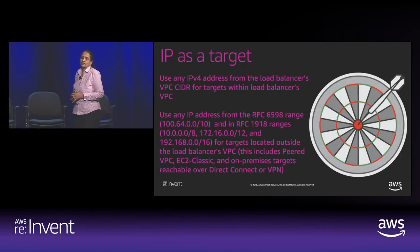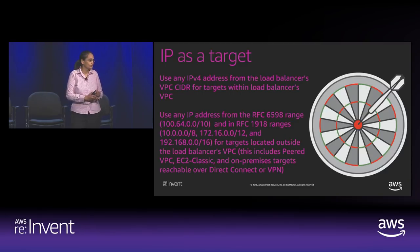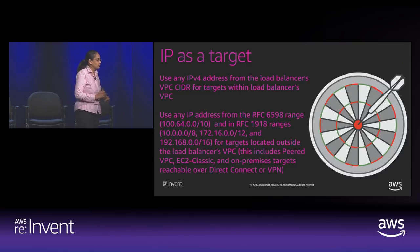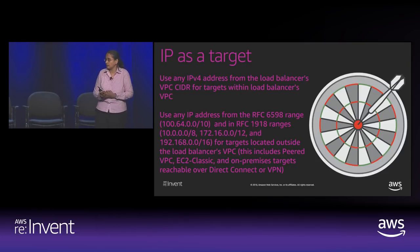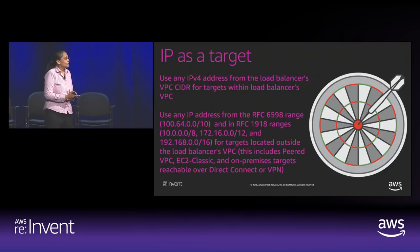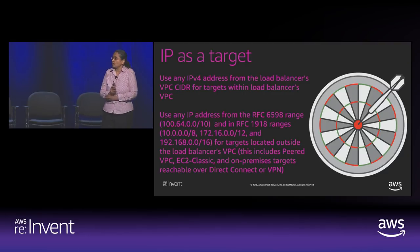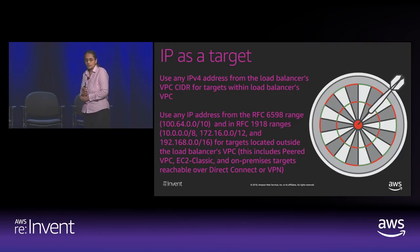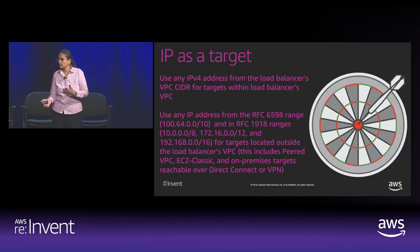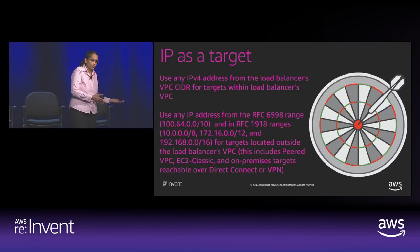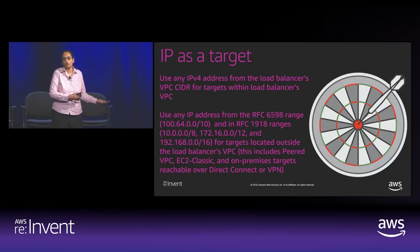IP as a target is a new feature we launched this year. Prior to this, you could support EC2 instances and containers. With IP as a target, the target can be any IP — inside your VPC, classically connected, in a peered VPC, or on-premises connected via Direct Connect or VPN. This opens up interesting architectures for on-prem workloads. A lot of customers use this during migration — trying out a few workloads using IP as a target becomes a migration path for pulling all workloads into the cloud.